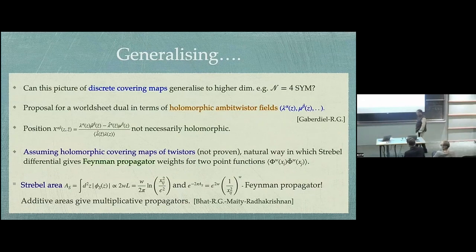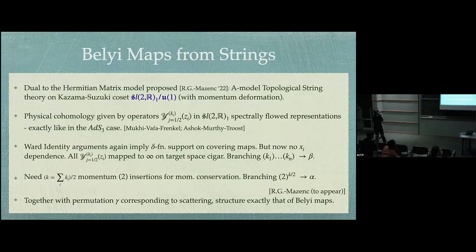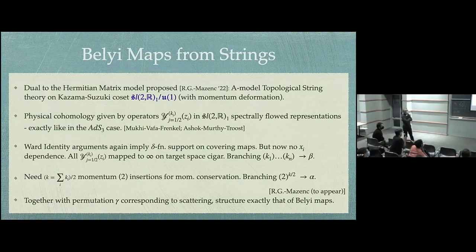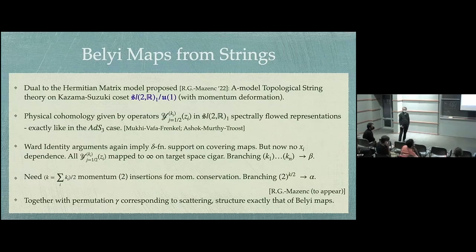Question: What is the central charge of the dual to the matrix model? Answer: Nine. So it's one of these critical cases — for the A-model it's like the Calabi-Yau central charge, except it's the cigar geometry. Let's thank Rajesh again.